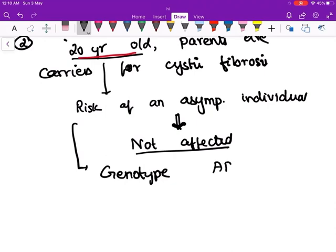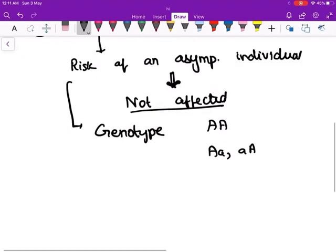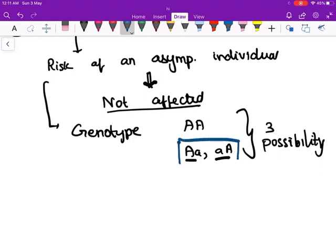This asymptomatic individual's genotype could be either completely normal or the person can be a carrier. Of these three possibilities, what is the possibility of the person to have a diseased allele is two. So of these three possibilities, in these two conditions alone this person can have a diseased allele, not a disease. So the possibility is 2/3.